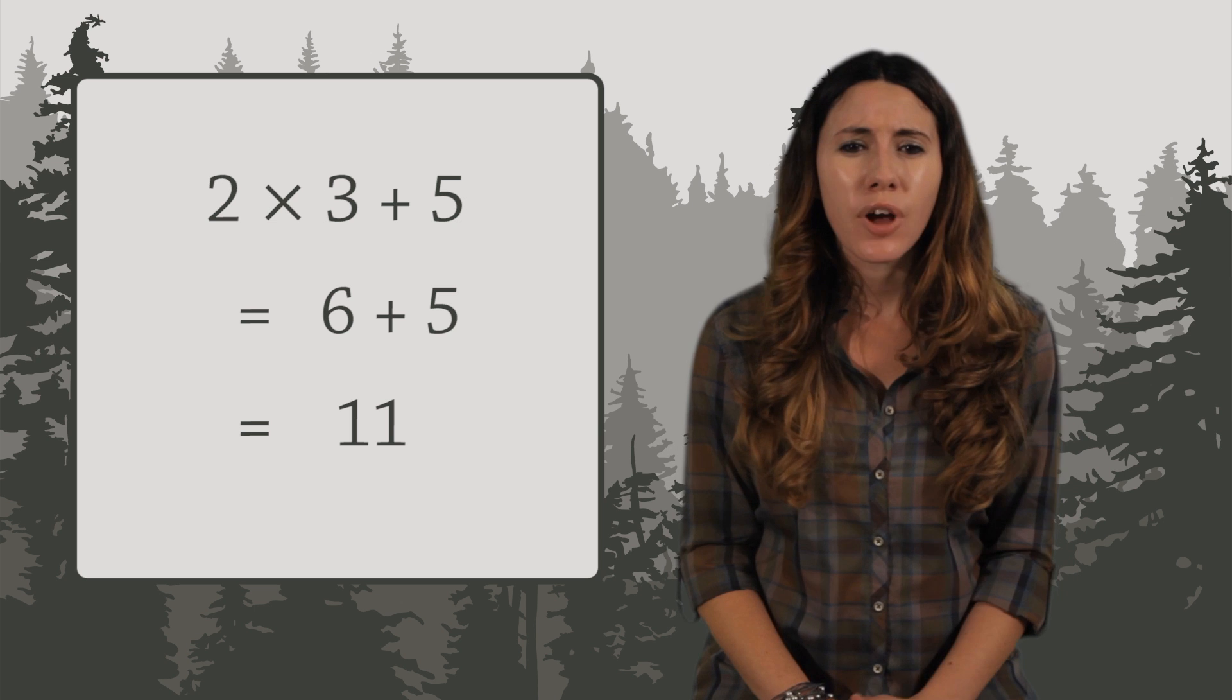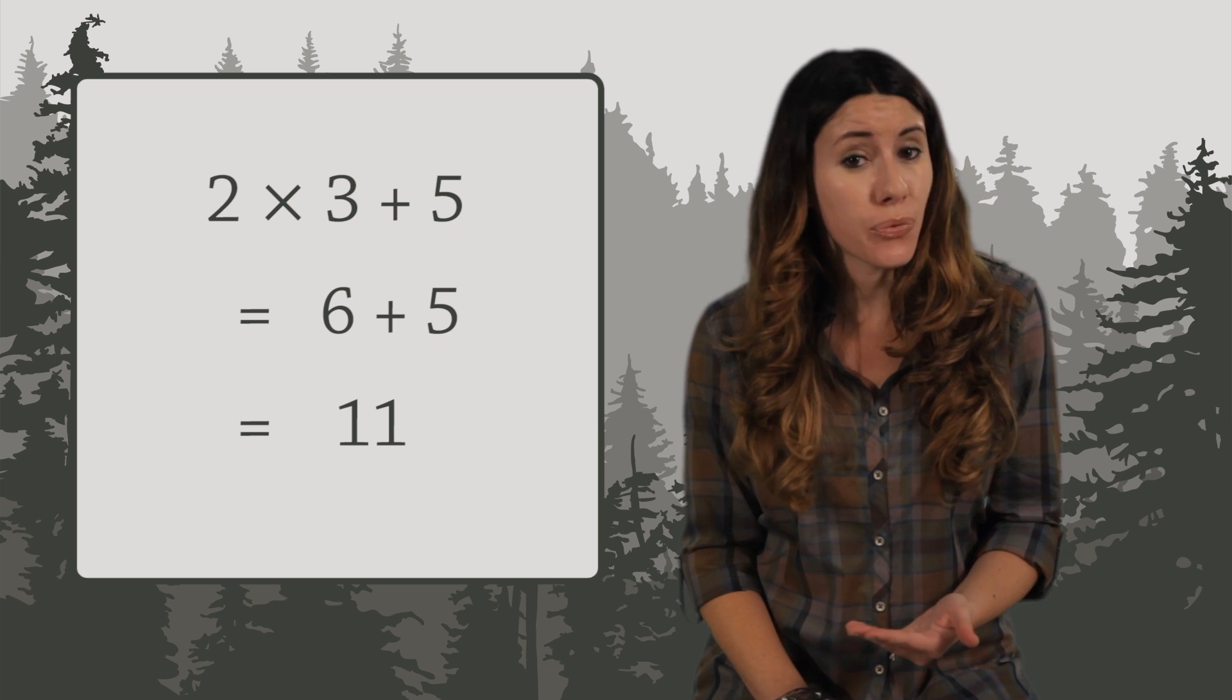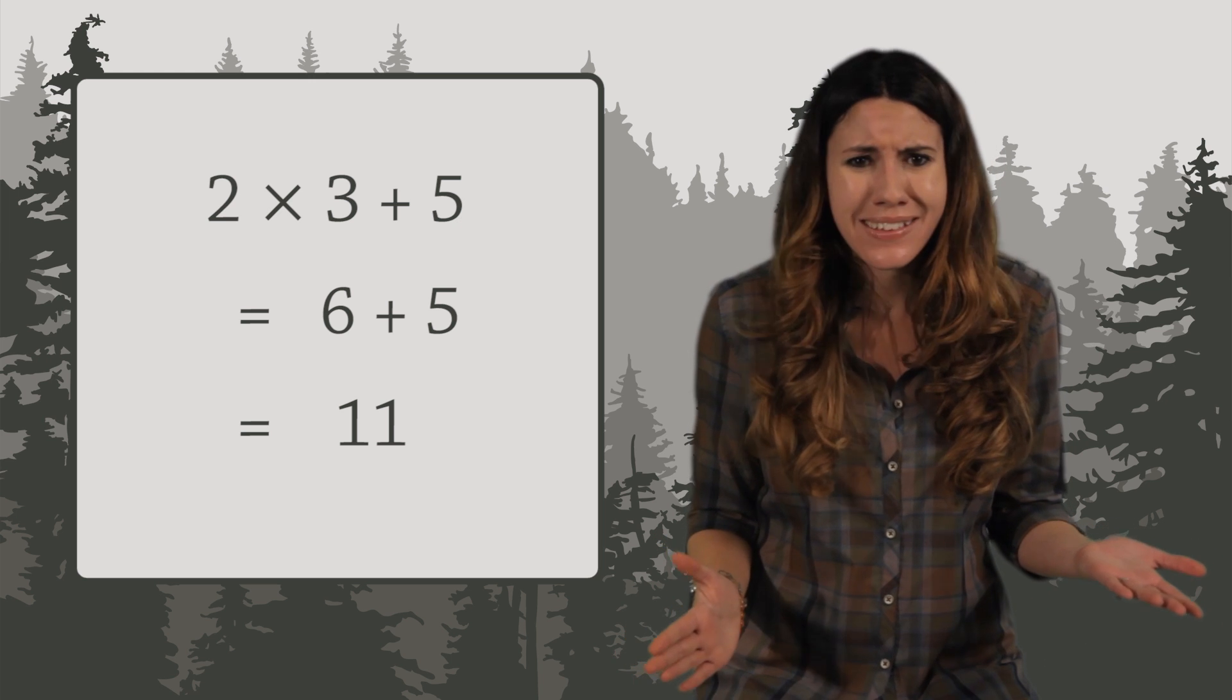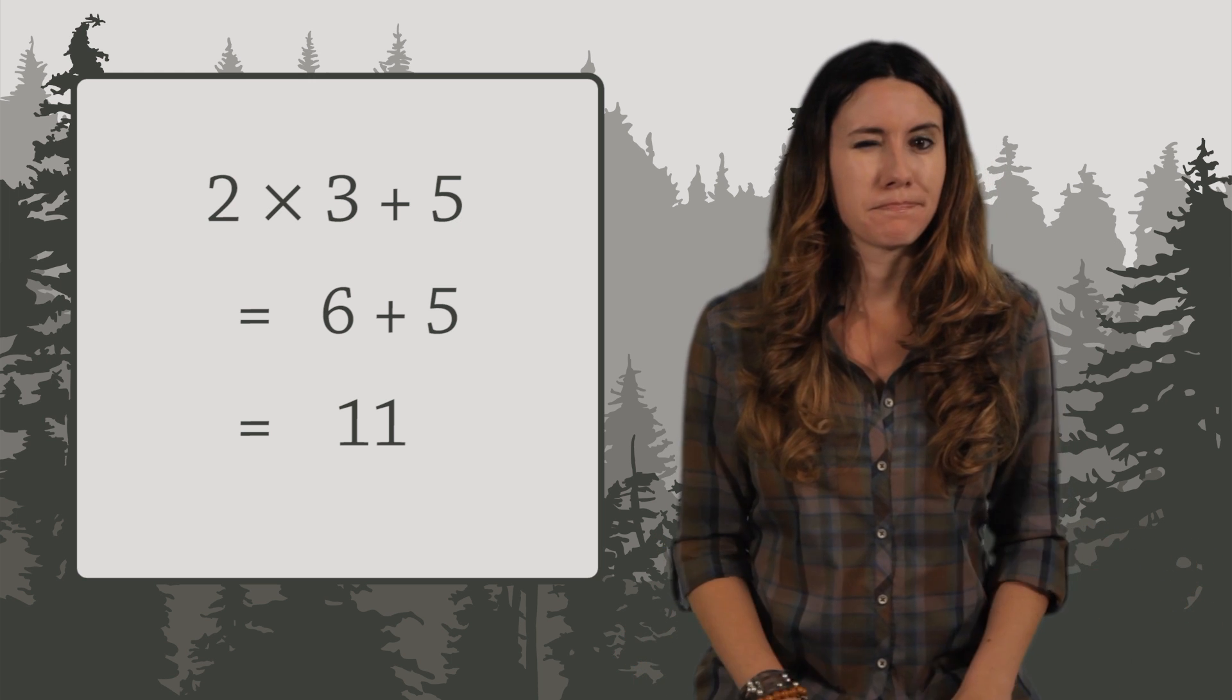But what if we run into a math situation where we need to first add 3 and 5, and then multiply by 2? How do you write this down? Hmm. Don't worry. Everything's under control. In cases like these, you use parentheses.